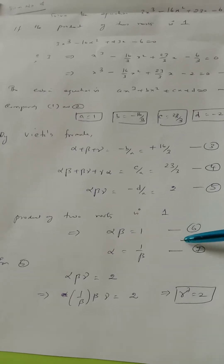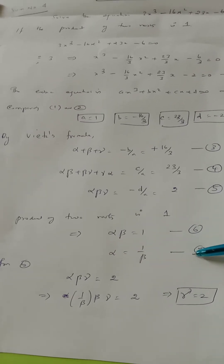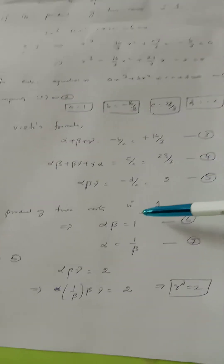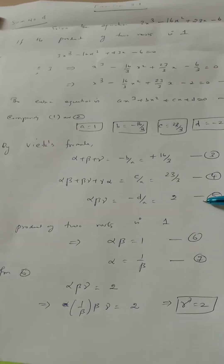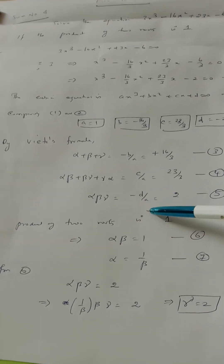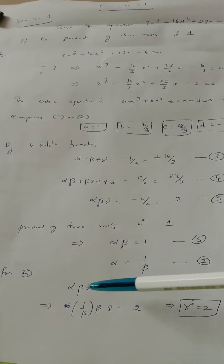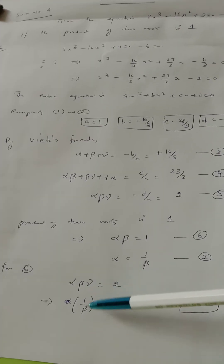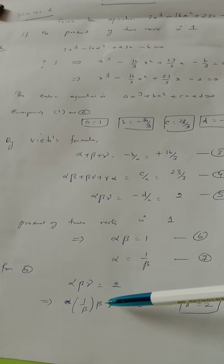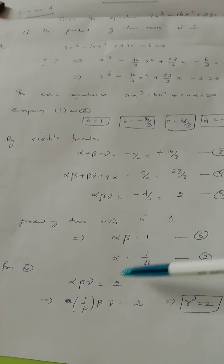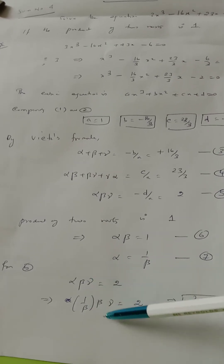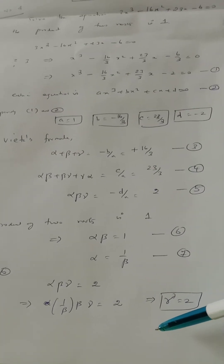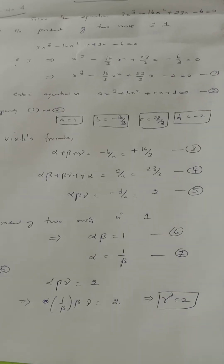Using the condition alpha·beta equals 1 and alpha equals 1 by beta. From the product of all three roots: alpha·beta·gamma equals minus D by A equals 2. Since alpha·beta equals 1, we get gamma equal to 2.